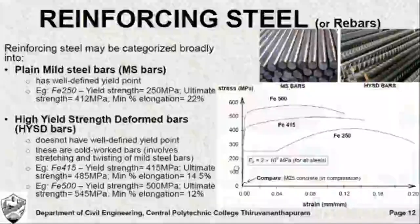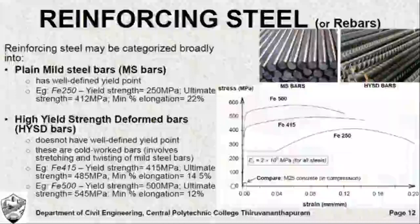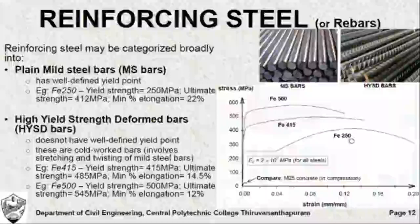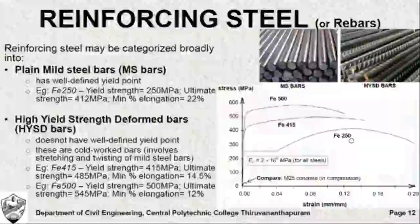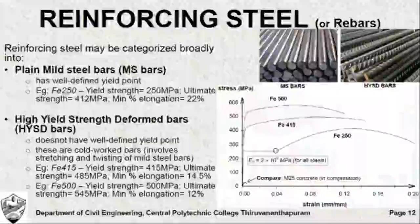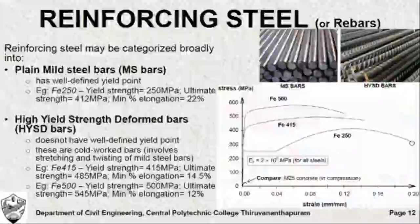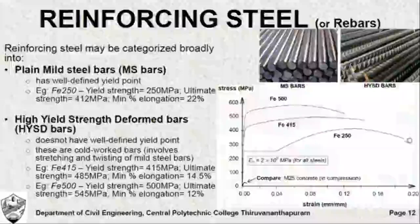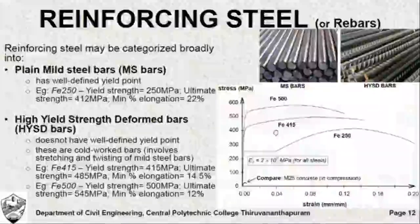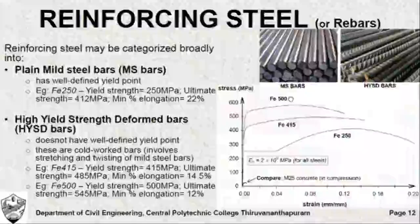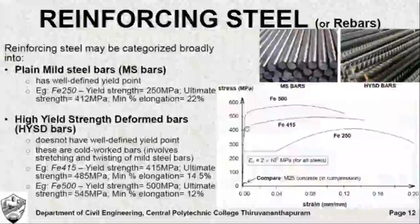Now let us understand the features of the stress-strain diagram. The FE 250 bar or plain mild steel bar is found to have a well-defined yield point, and the elongation of this material is very, very large. This material is very ductile because of a very high value of failure strain. However, for FE 415 and FE 500 bars there is no well-defined yield value.